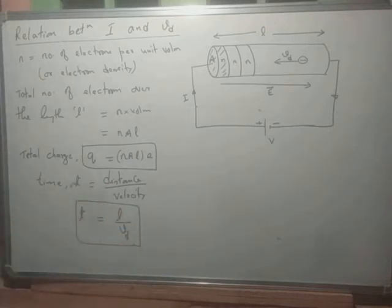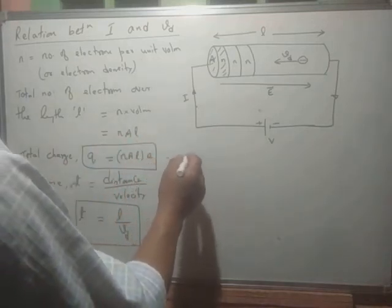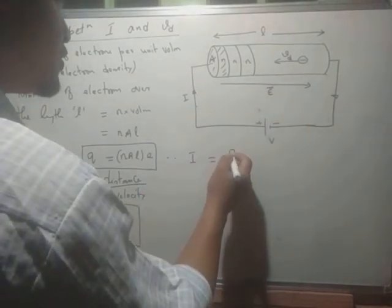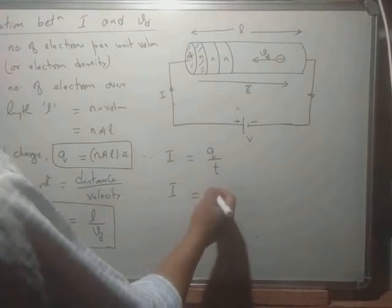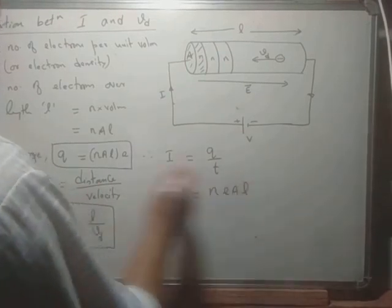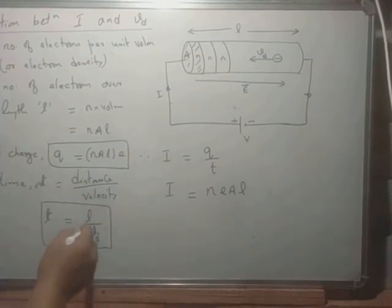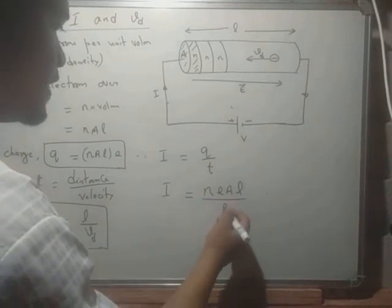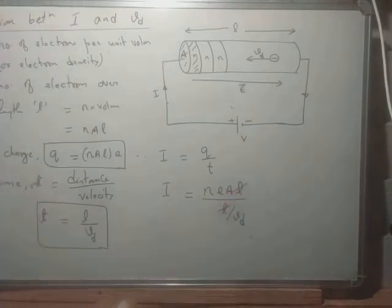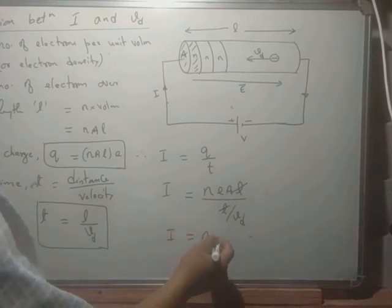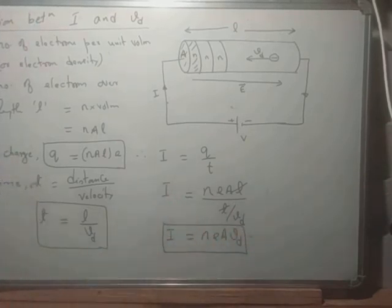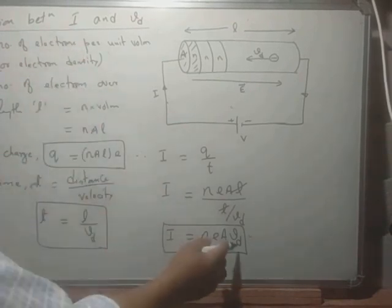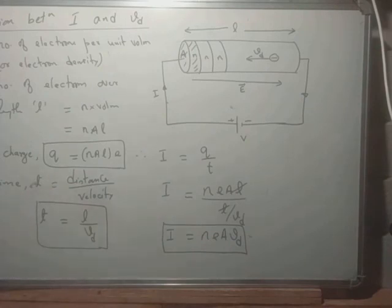Therefore, current I equals charge upon time: I = Q / t. Substituting Q = n × e × A × L and t = L / V_D, the L terms cancel, giving us I = n × e × A × V_D. This is the relation between current I and drift velocity V_D.